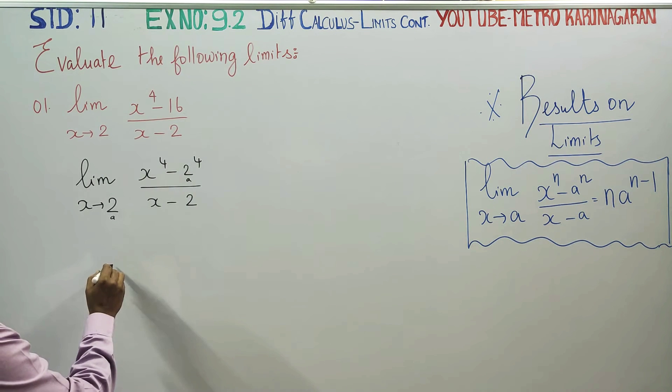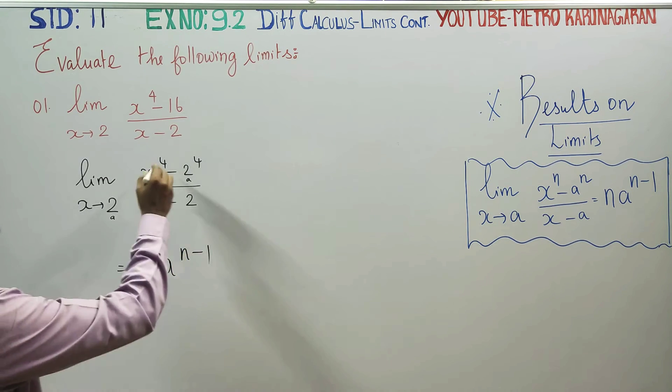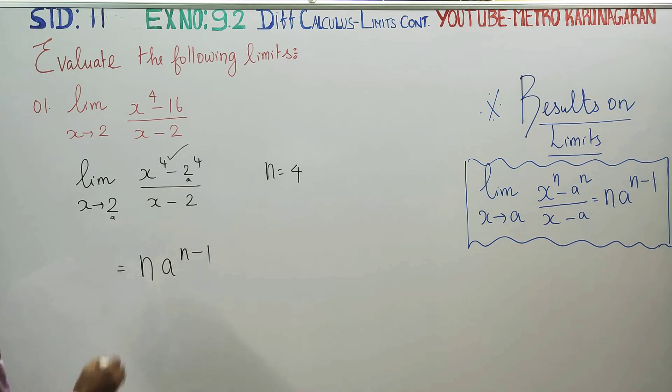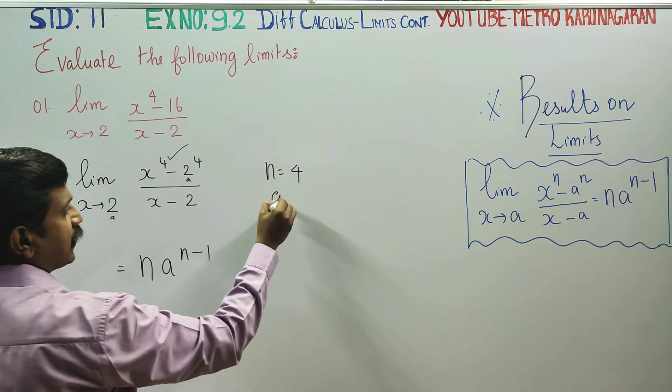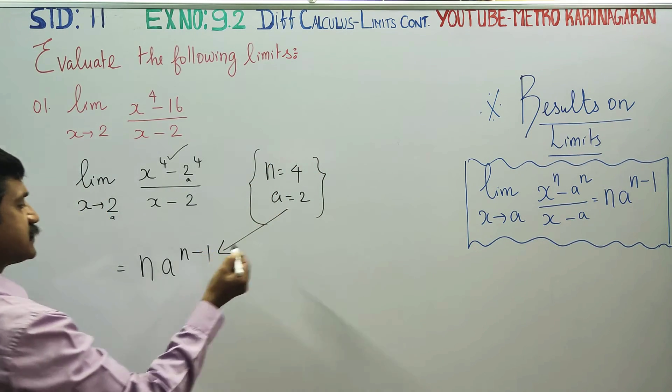This is the formula: n into a to the power n minus 1. Now, n is equal to 4, and a is equal to 2. Now, these values apply for the sum.